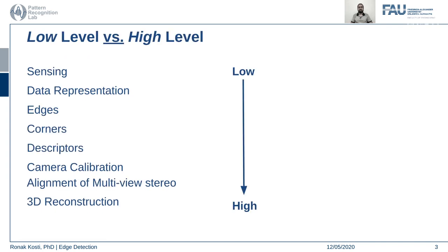Before we go ahead, let's look at what we mean by low level and high level computer vision tasks. Computer vision works in the domain of understanding real world images. From real world images we extract information relevant for our application — it could be edges, corners, or particular features. The computer vision pipeline has a whole set of steps from sensing and data representation to extraction of edges and corners, up to 3D reconstruction. Each of these steps has different methods and state-of-the-art algorithms.